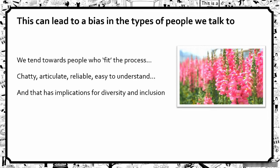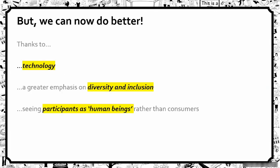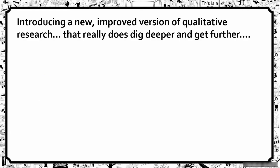That has implications for diversity and inclusion. But we think we can do better now, for three reasons. Technology lets us do research in new and different ways. We're being required to truly think about diversity and inclusion. And there's been a positive shift from seeing participants as consumers to seeing them as human beings, putting them more at the center of research.